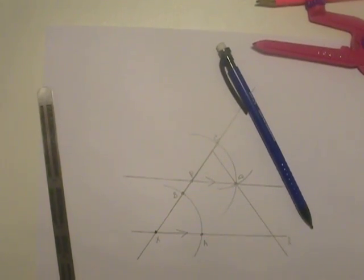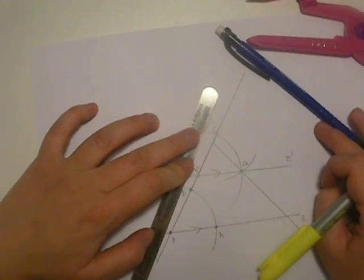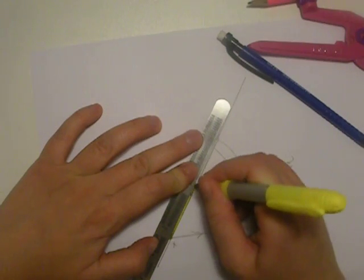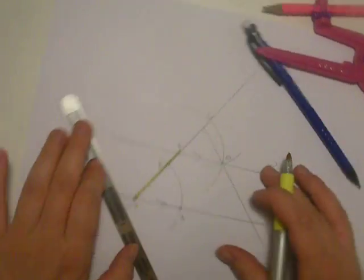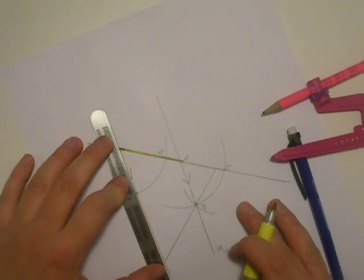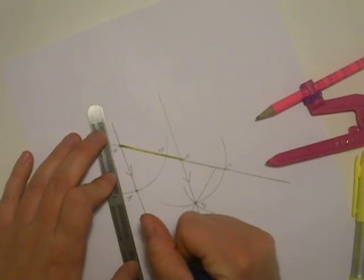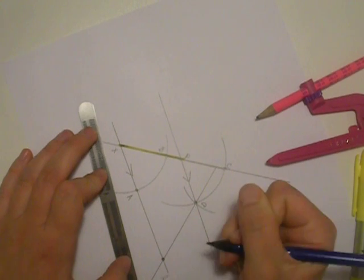You can't really see it around all this extra stuff, but if you look, we have this. Let's label this point Y.